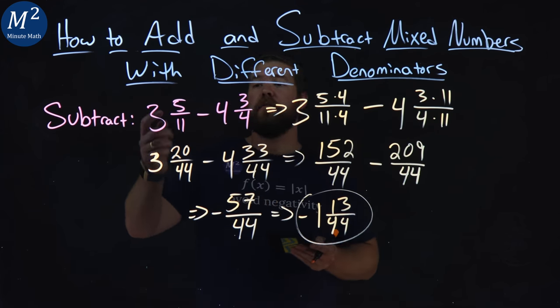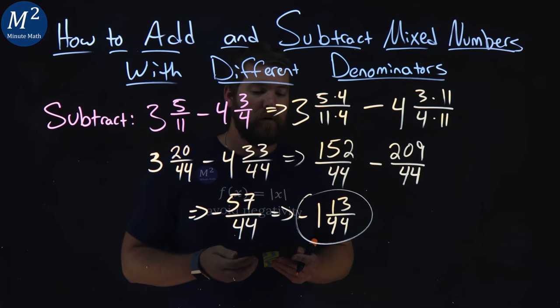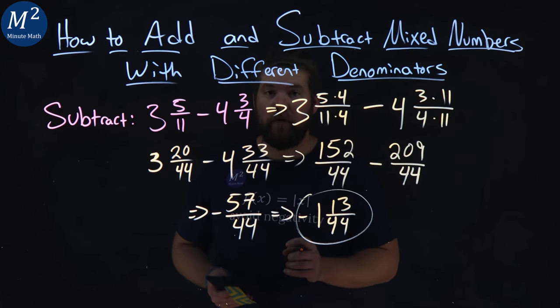And there we have it. 3 and 5 elevenths minus 4 and 3 fourths comes out to be negative 1 and 13 over 44.